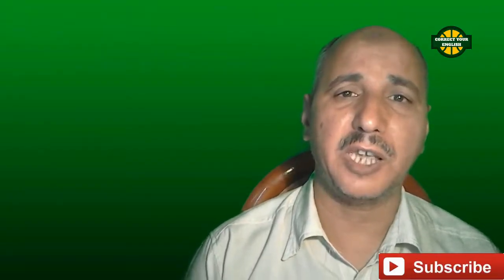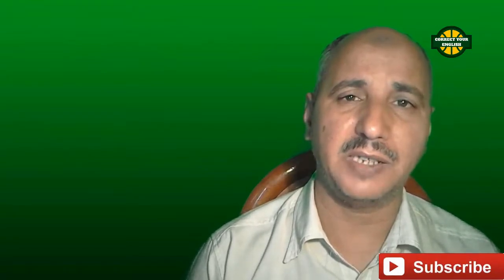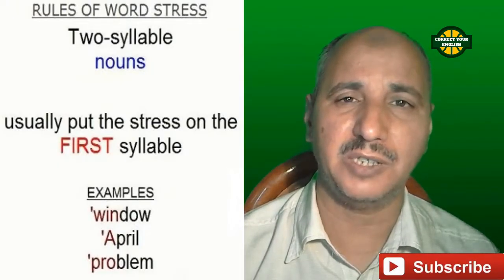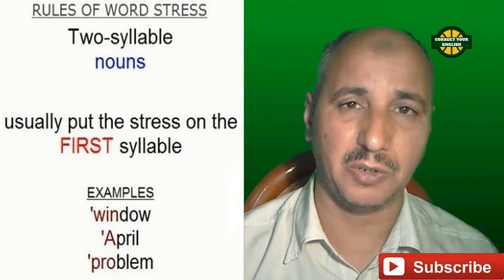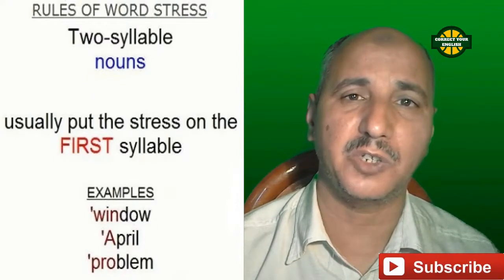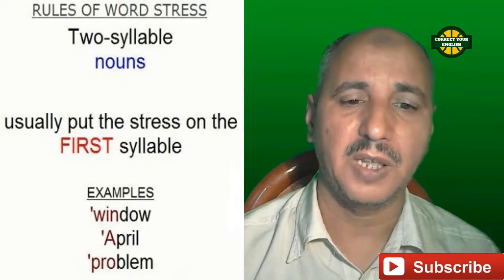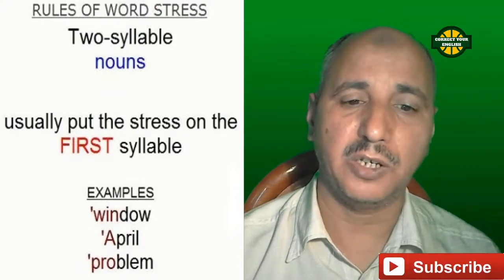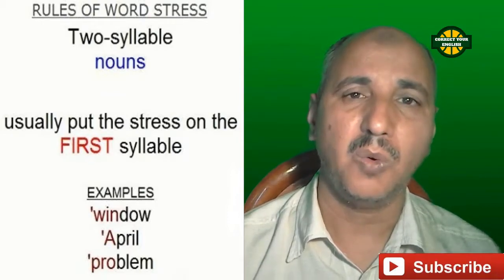Let's start with nouns. Suppose we have a noun with two syllables — which one should be stressed? Usually, we put the stress on the first syllable. As you can see on the screen, we have many examples. For example, 'window' has two syllables, so we stress the first one, which is colored in red. Window.